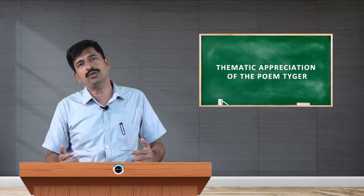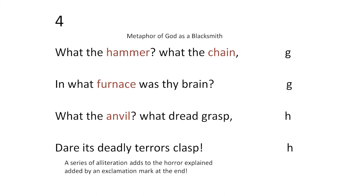In the fourth stanza, various instruments used in the creation of the tiger are mentioned: the hammer, the chain, the furnace, and the anvil. Observed closely, these tools portray the creator as a blacksmith who forged such a powerful creation. Therefore, the last line speaks of 'deadly terror's clasp,' indicating that this fearsome creative act — akin to blacksmithing — leads to the creation of the tiger.